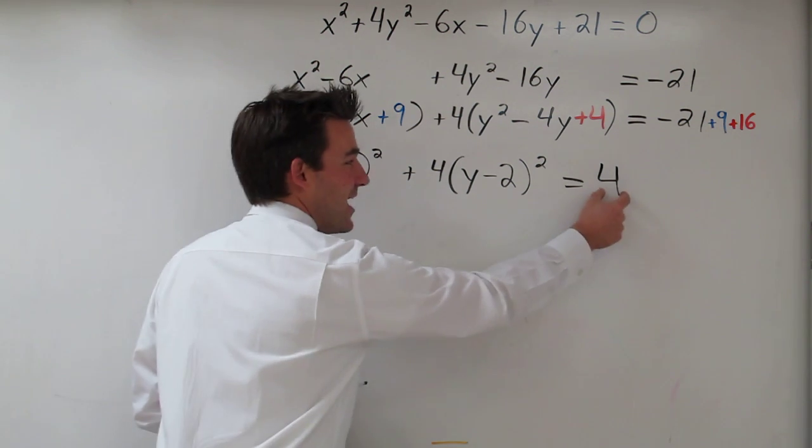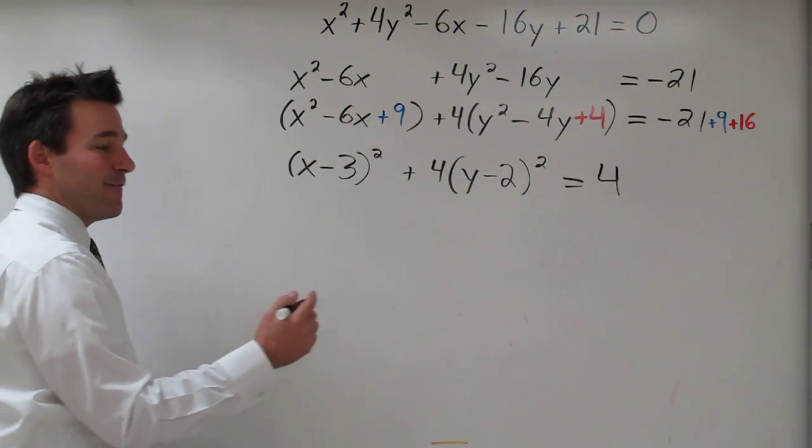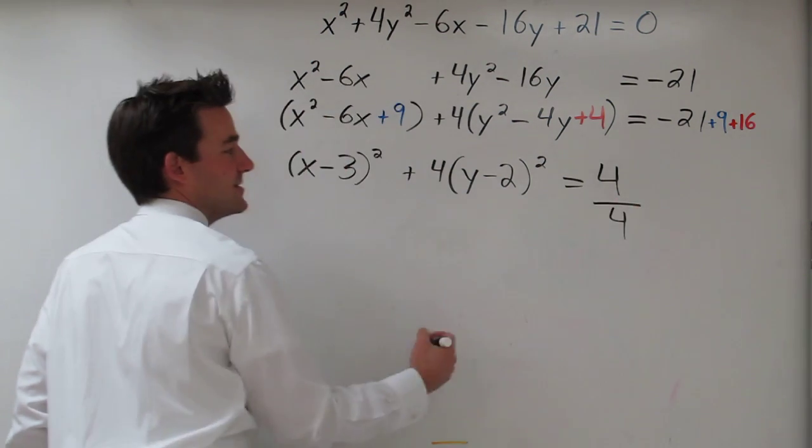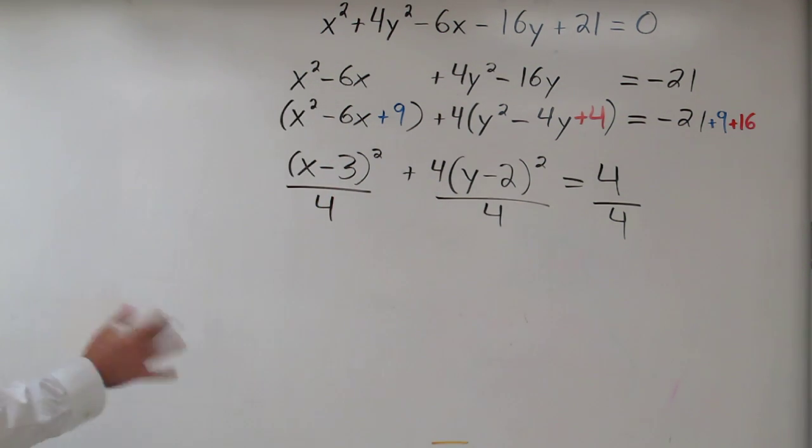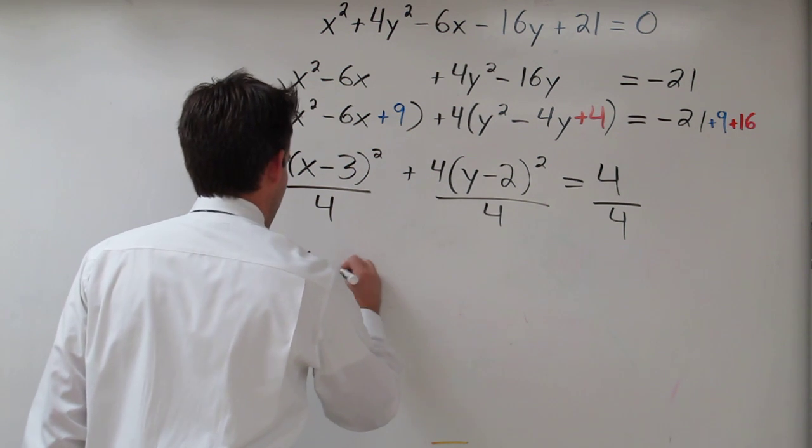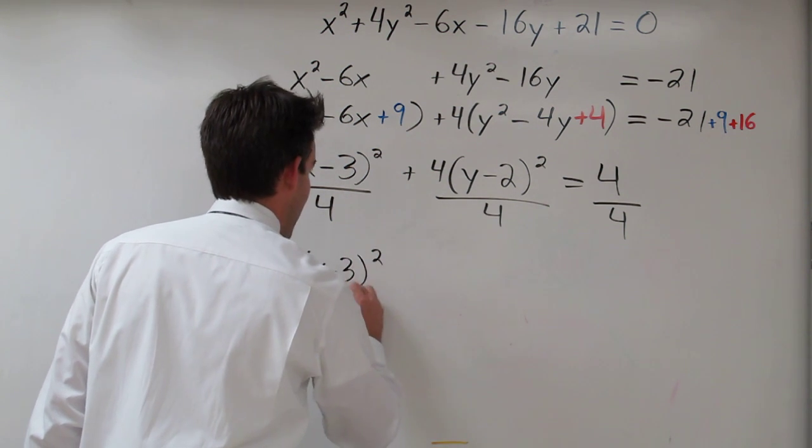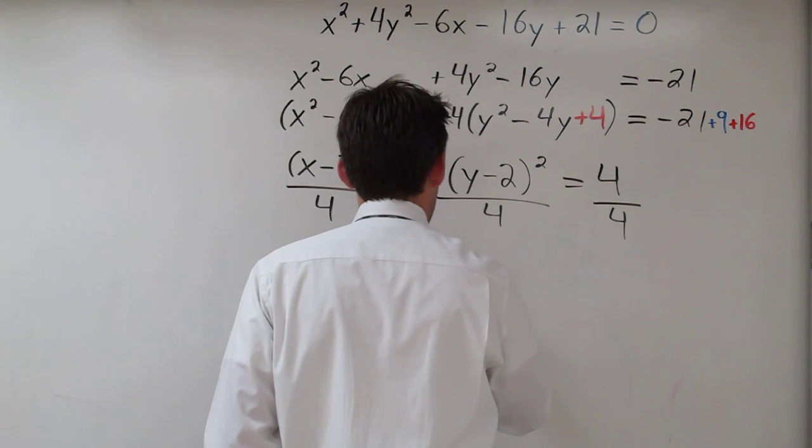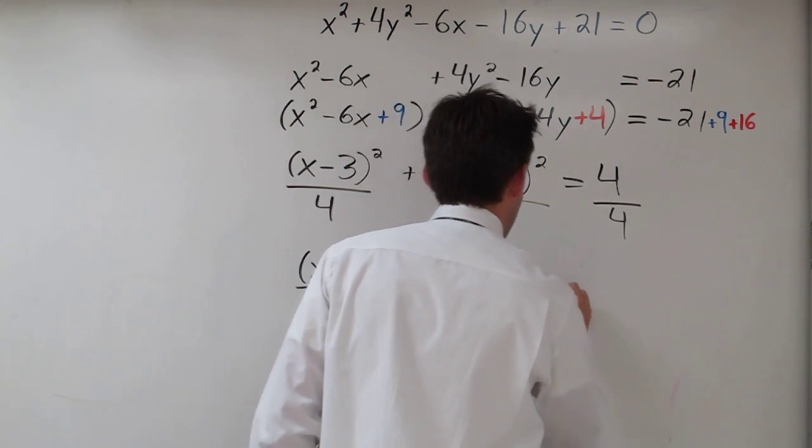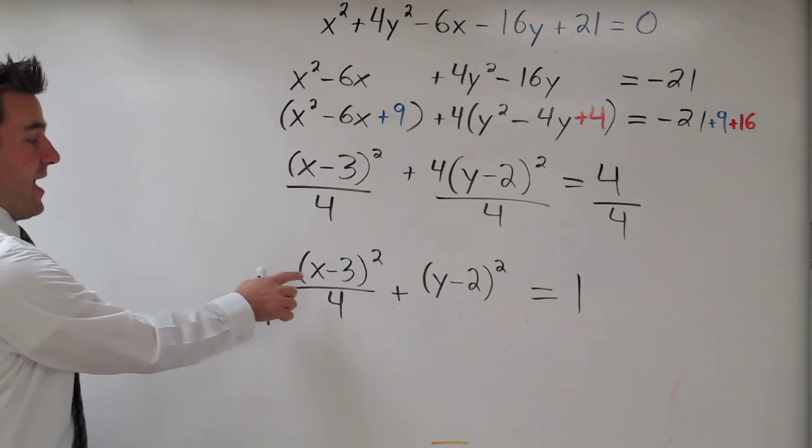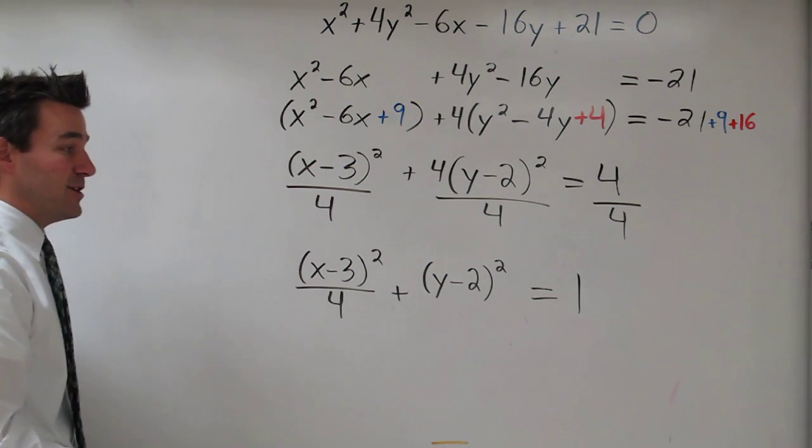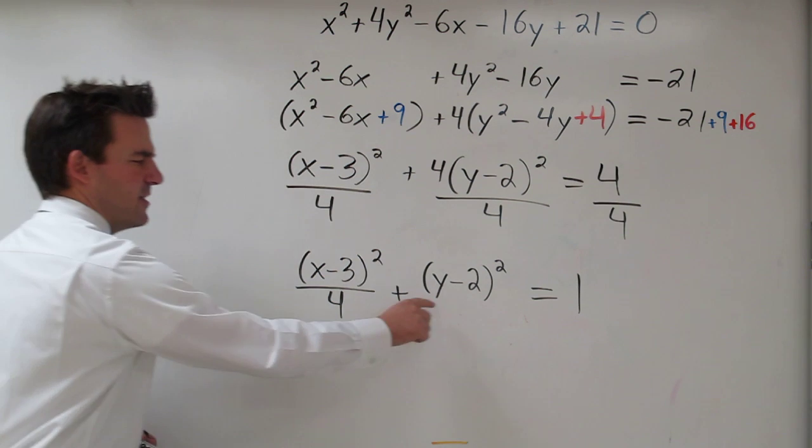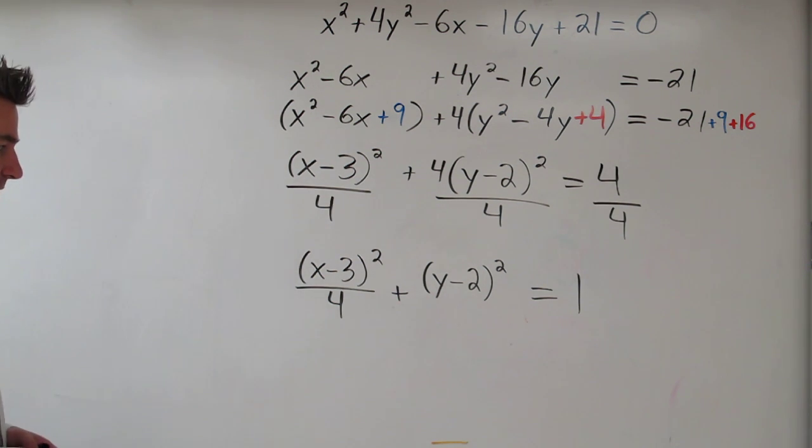So if this is an ellipse, we'd need a 1 on this side. So let's divide everything by 4 to get a 1 on this side. When we simplify, we end up with quantity x minus 3 squared divided by 4 plus the quantity y minus 2 squared equals 1. So this would have a denominator of 1, but we omit that. There we go. Here's an ellipse centered at 3, 2.